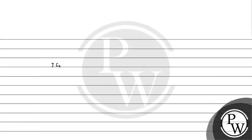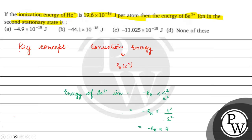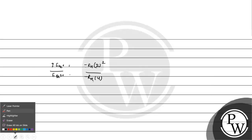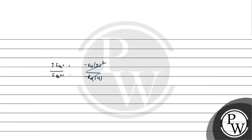Ionization energy of He plus kiske barabar hojaega — woh humare pas hojaega minus rH into 2 ka square. Energy of beryllium plus 3 versus He plus kiske barabar hojaega — humare pas aajega minus rH into 4.